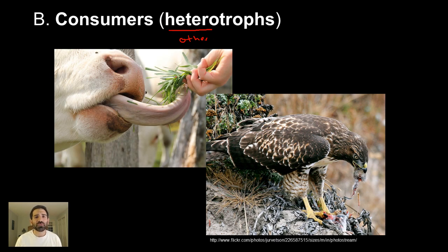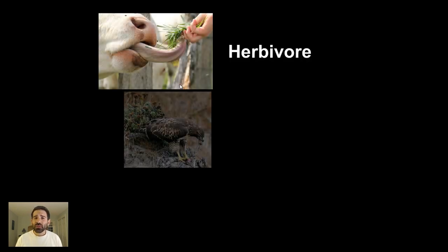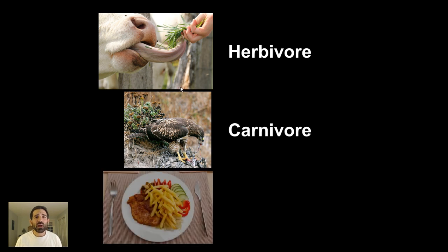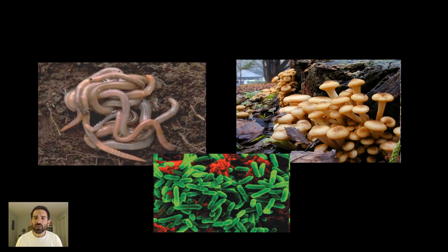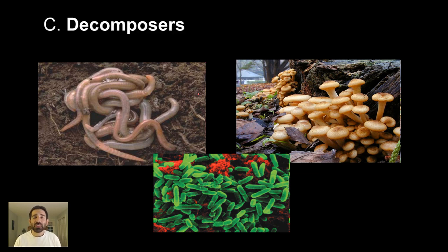Herbivores and carnivores are good examples of consumers. Herbivores are plant eaters, carnivores are meat eaters, and omnivores eat both meat and plants. These three organisms — worms, bacteria, and fungi — are held together by their niche: they are all decomposers. They break down dead material and return nutrients to the soil. They can be considered the recyclers in an ecosystem, playing a really important role, as they feed at every single level of the food chain.